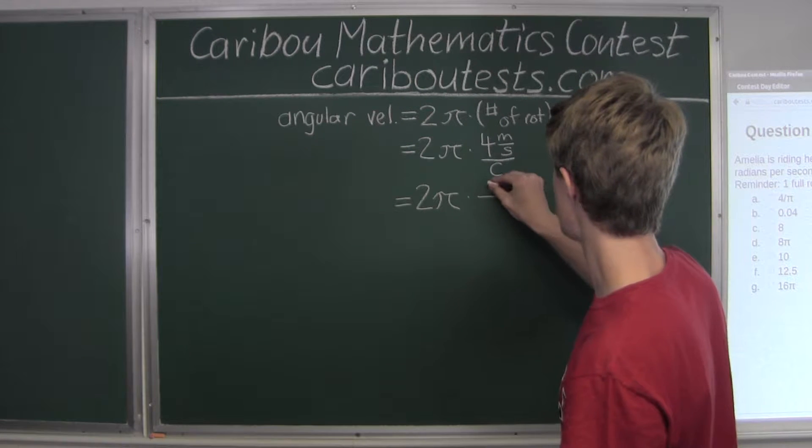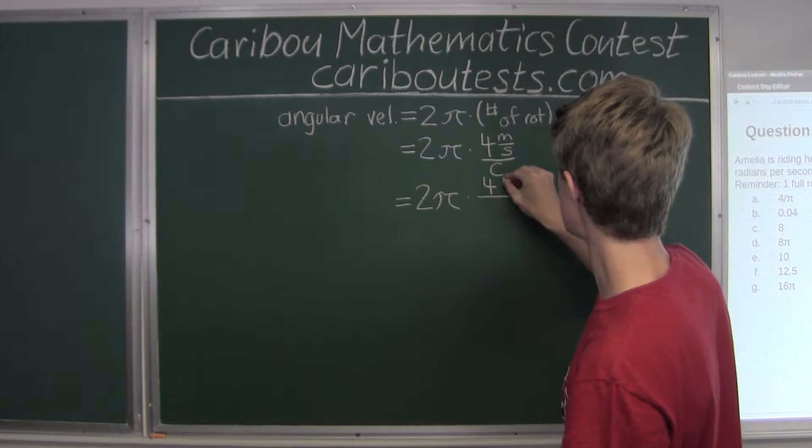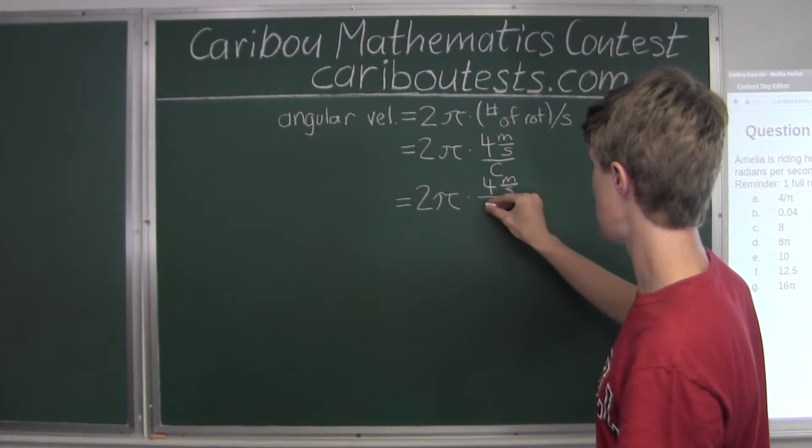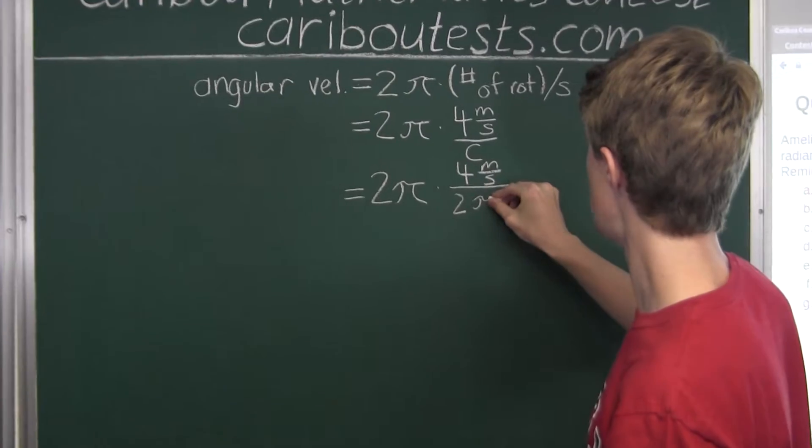So, again, we would have 4 meters per second, and then we would have the 2πr in the denominator.